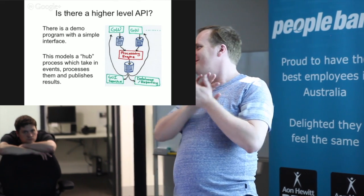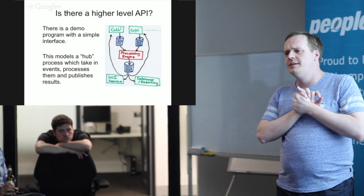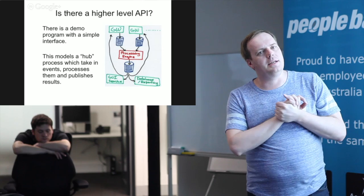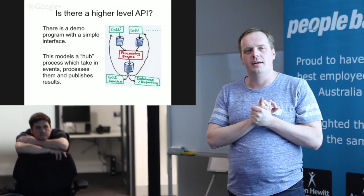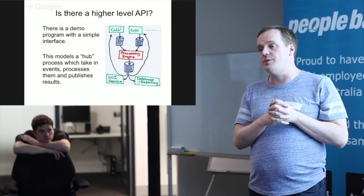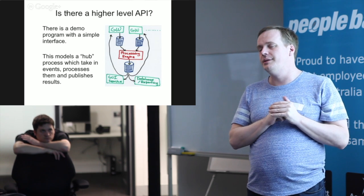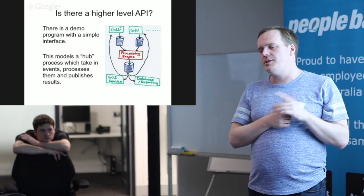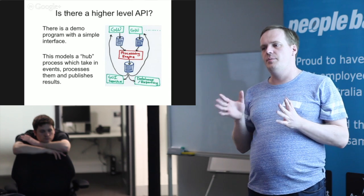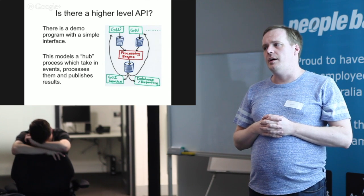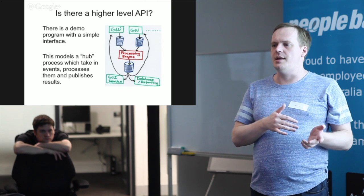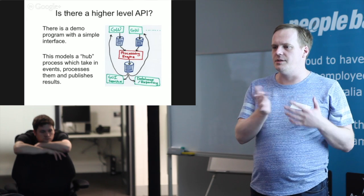Chronicle is used in a number of banks. Outside finance, the main use people have found is as a fast logger — because it's fast enough that you don't need to turn off debug logging; you can log absolutely everything in the system. Some people like having access to all of that data, particularly if they've had to turn off logging in production, been burnt by it, and then had to diagnose something after the event was already gone.